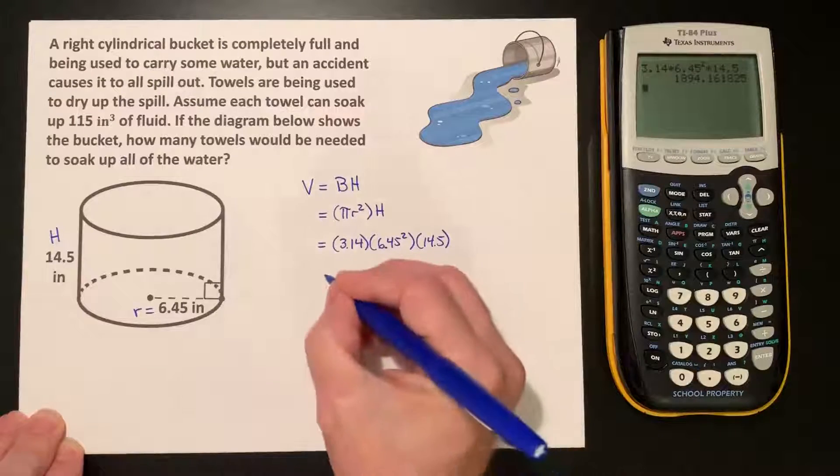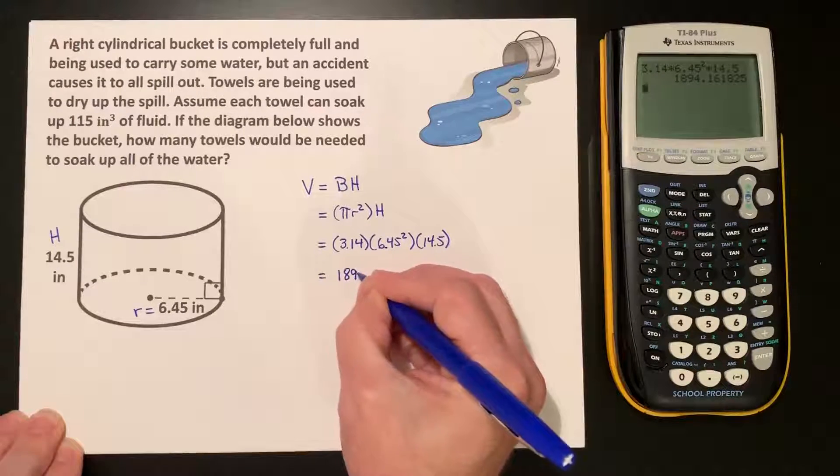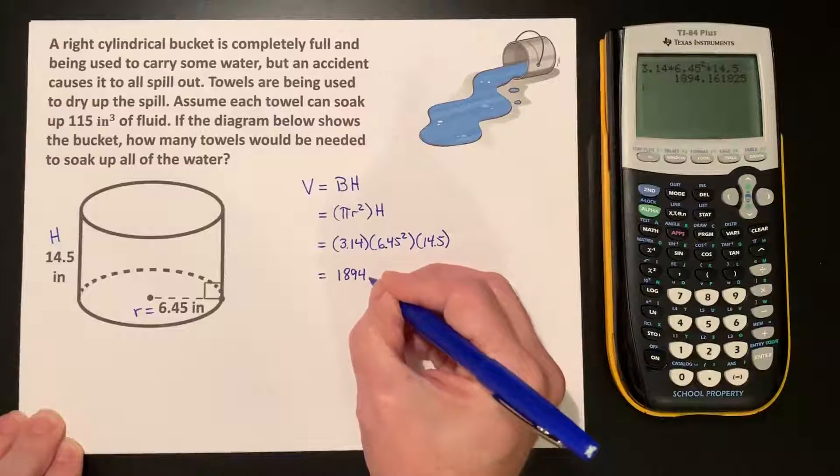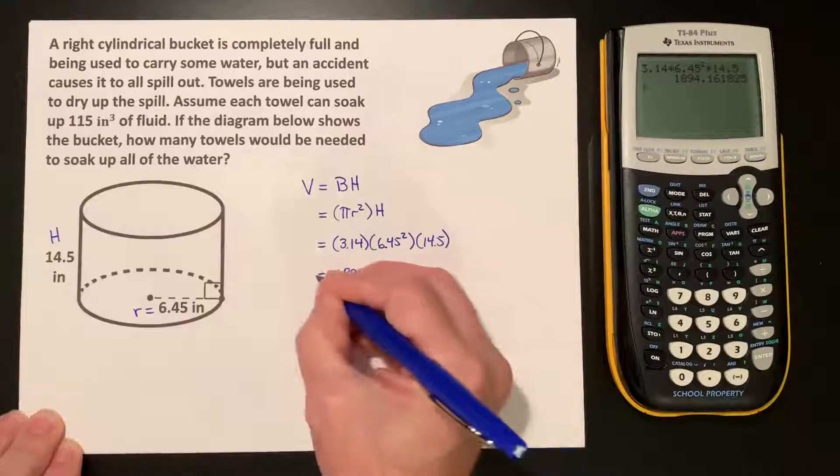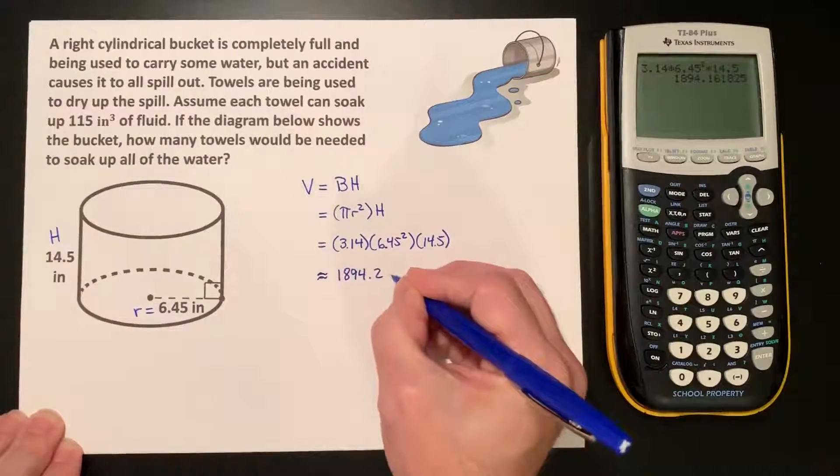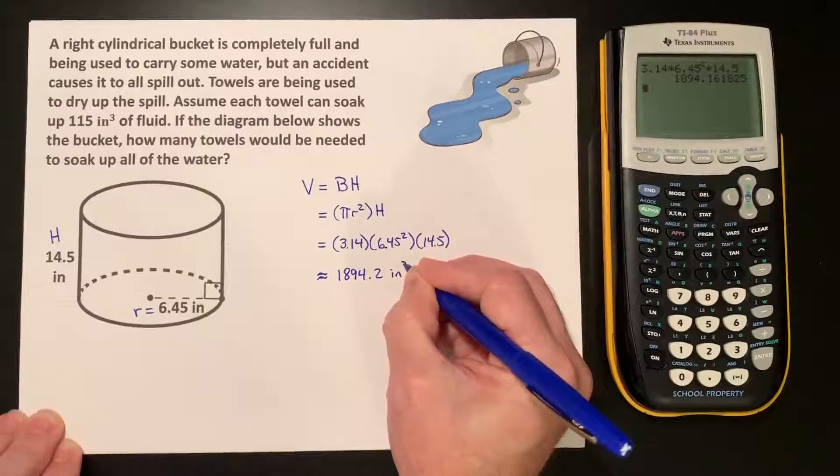And we get 1894.2, approximately, inches cubed.